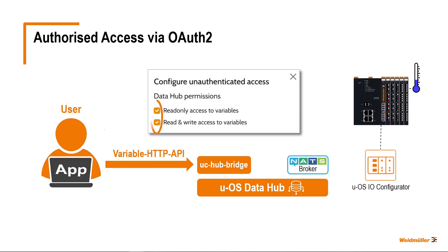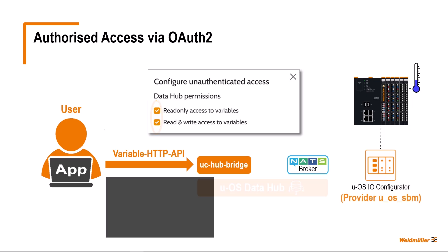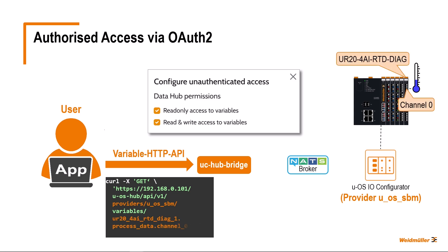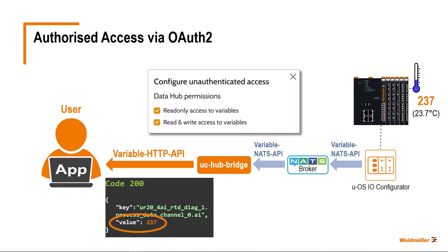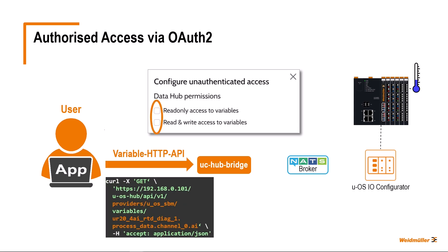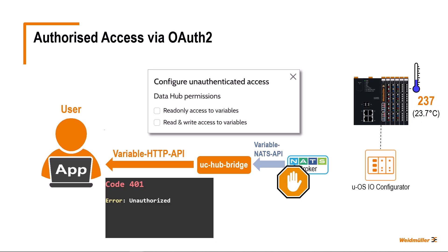In the last video, we granted unauthenticated access for test purposes, so that access to the provider app's resources without authorization was possible. In our example, we can send a curl query to the provider UOS SBM via the variable HTTP API and ask for the temperature value measured on the temperature measurement module on channel 0. The UC HUB bridge converts this query from variable HTTP API to variable NATS API and sends it to the broker, which then contacts the requested provider. In response, we receive code 200 for error-free execution and the temperature value — in our example 237 tenths of a degree, meaning 23.7 degrees Celsius. However, this procedure is not secure and only permitted for test purposes. I will therefore deactivate unauthenticated access and send the curl query again. The consequence is that access is rejected by the broker, and as we can see, we now get back code 401 and the error message unauthorized.